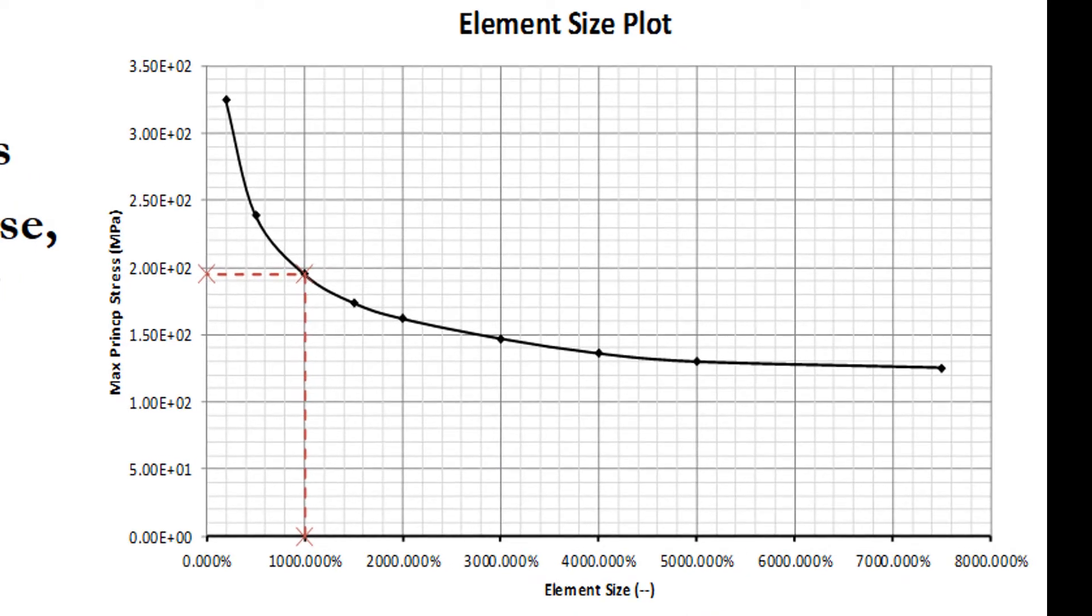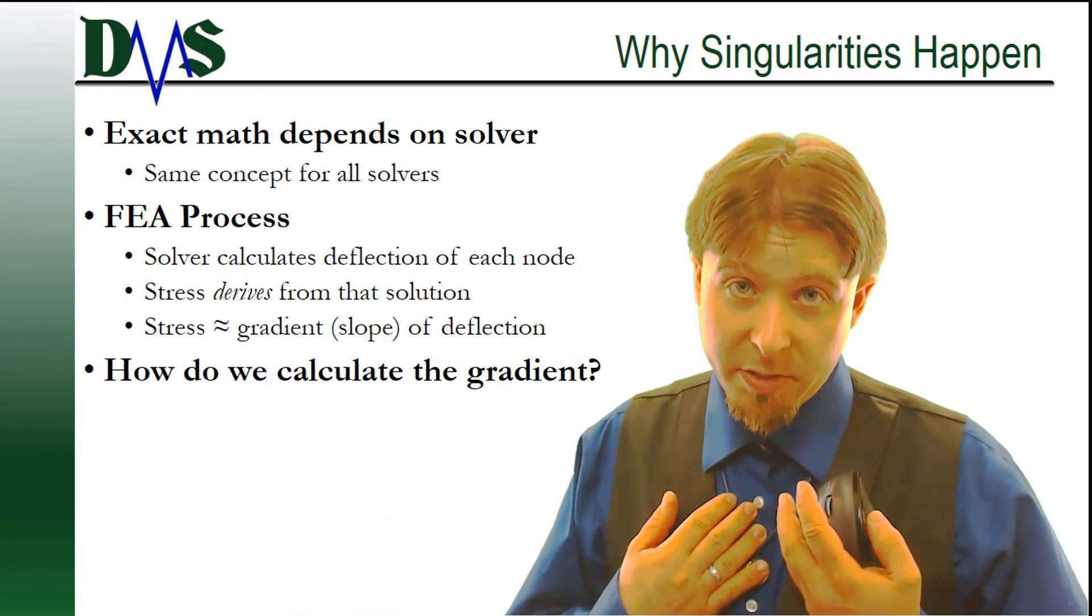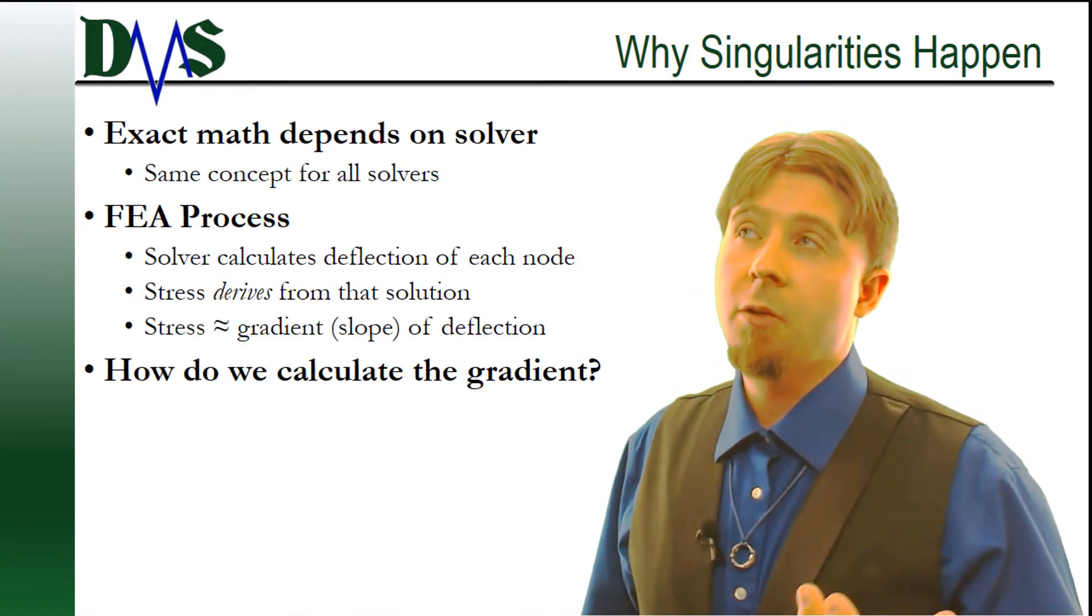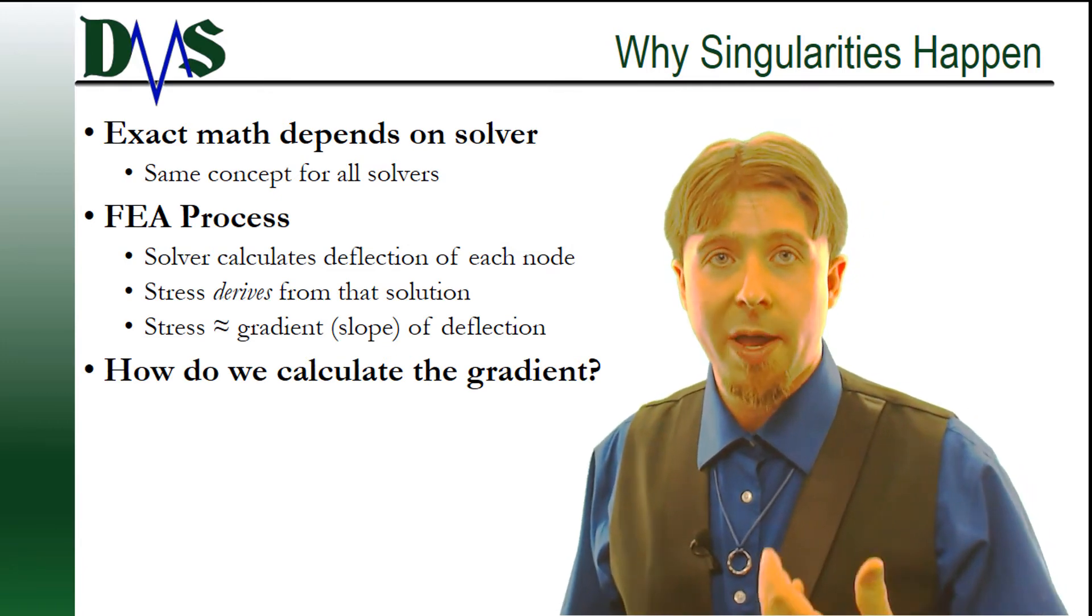As you refine the mesh, it just keeps going higher and higher and higher. The stress never tapers off to some finite value. Take a look at this figure: as the element size moves down to zero, the slope of the plot keeps getting steeper and steeper and steeper. At this rate it's going to curve right up to infinity, a vertical line. So if it never converges, you have a stress singularity and you can ignore it.